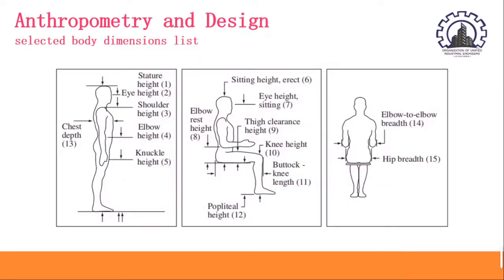For example, these are the selected body dimension lists. The use of this selected body dimension list is to know the standard positioning of the joints to maintain neutral postures.